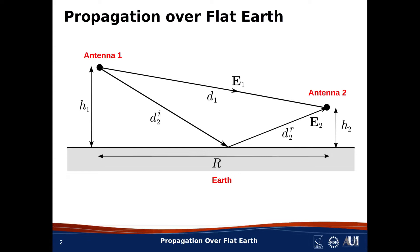We are going to assume that the signal received by Antenna 2 is simply the coherent sum of the instantaneous electric field intensities E sub 1 and E sub 2. We are not concerned about the pattern of Antenna 2 either, because the waves are arriving from nearly the same direction, as long as R is much greater than H sub 1 and H sub 2.